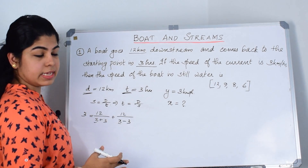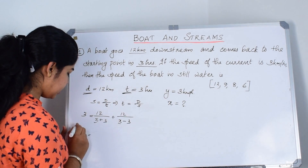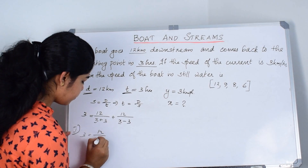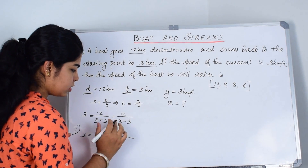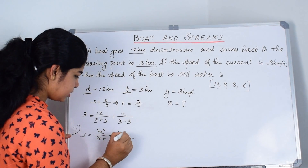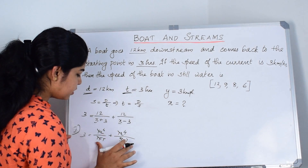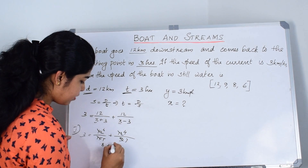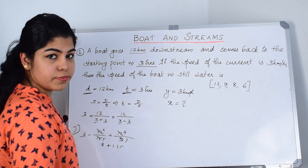Taking the first option X equals 12: we get 12/(12+3) plus 12/(12−3), which is 12/15 plus 12/9, giving 4/5 plus 4/3. That's approximately 0.8 plus 1.25, which does not equal 3. So we can eliminate the first option.